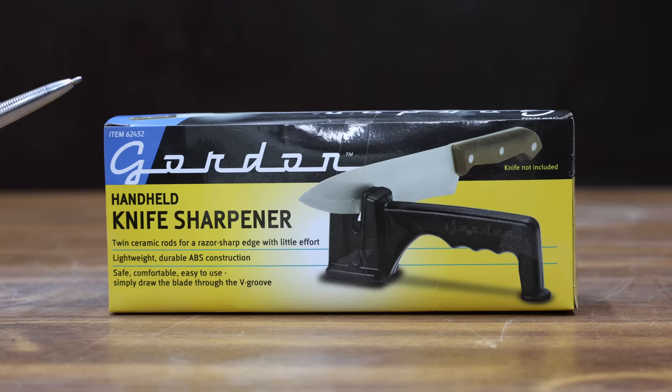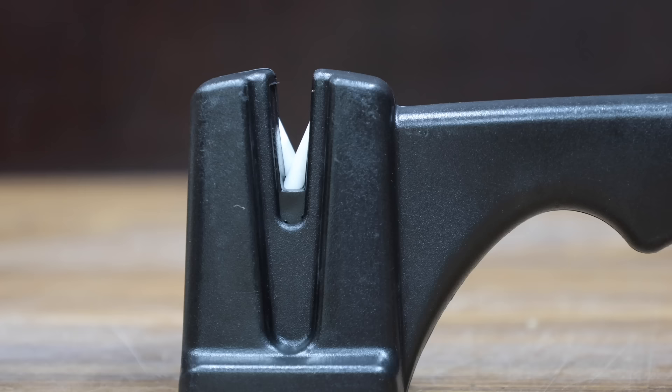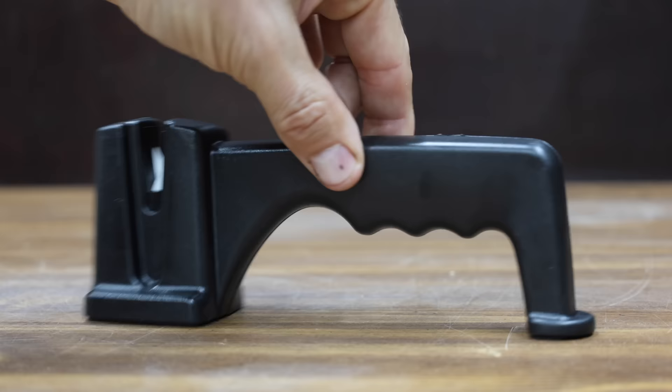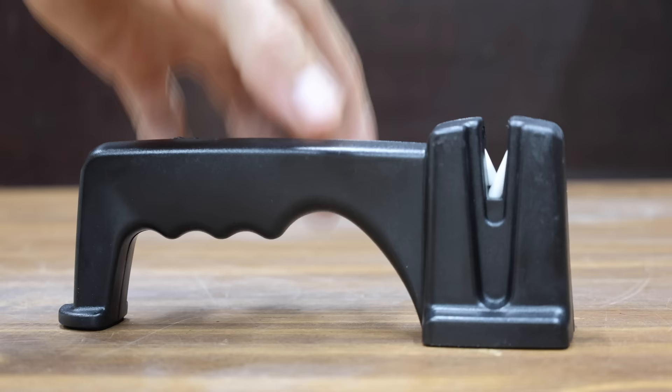If it's all about price, you can't get much more affordable than this Gordon brand, which is sold at Harbor Freight. It has two ceramic rods for razor-sharp edge with little effort. Made of lightweight, durable ABS construction. Simply draw the blade through the V-groove. The Gordon is made in China.